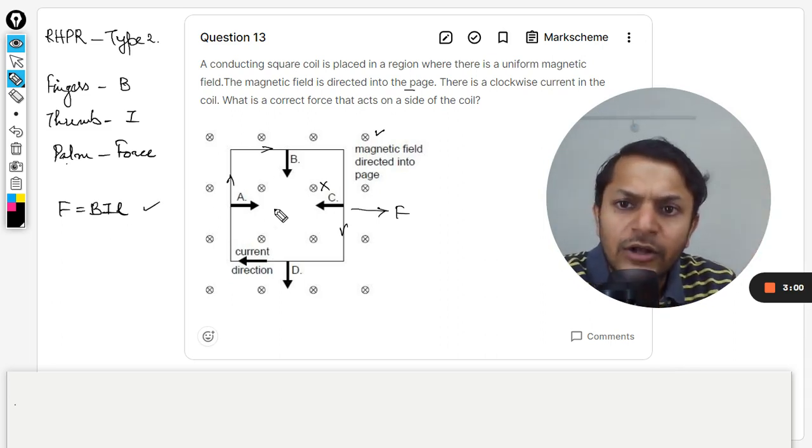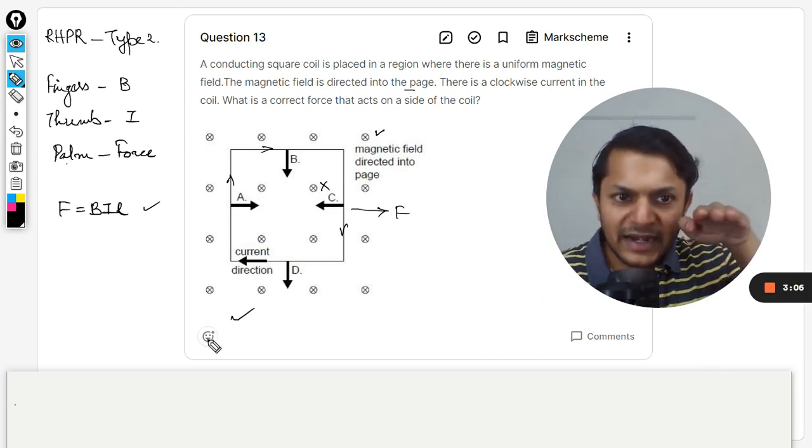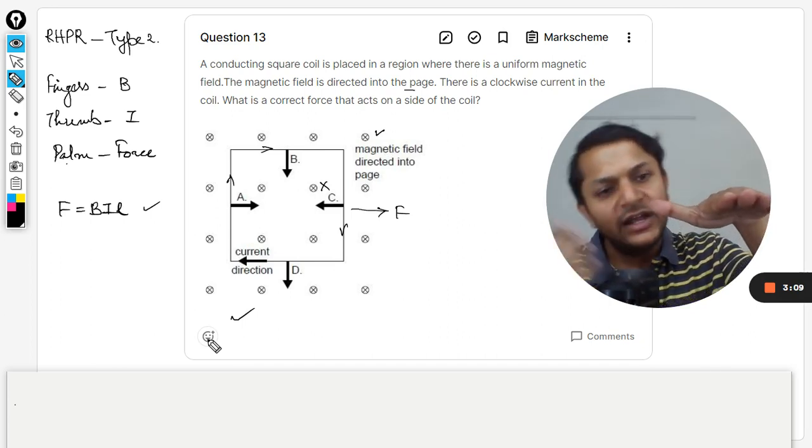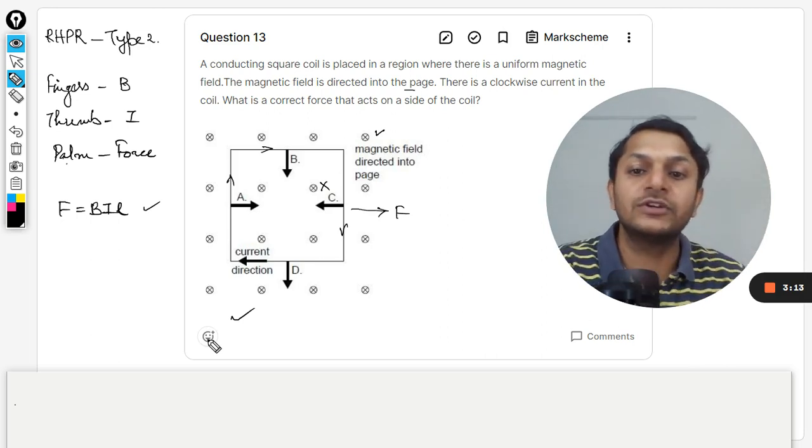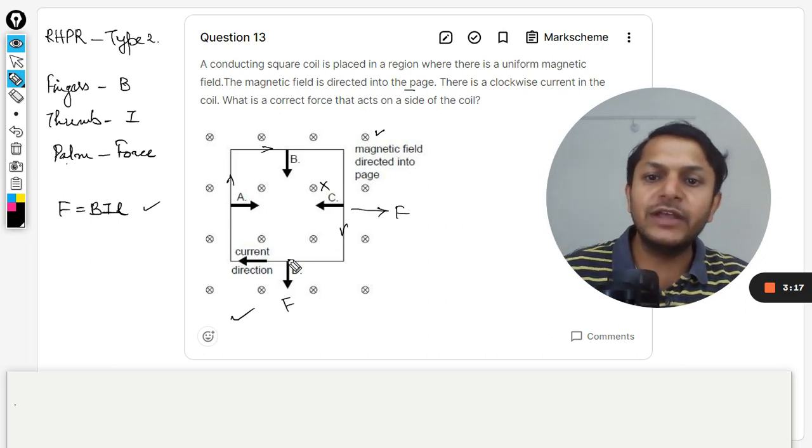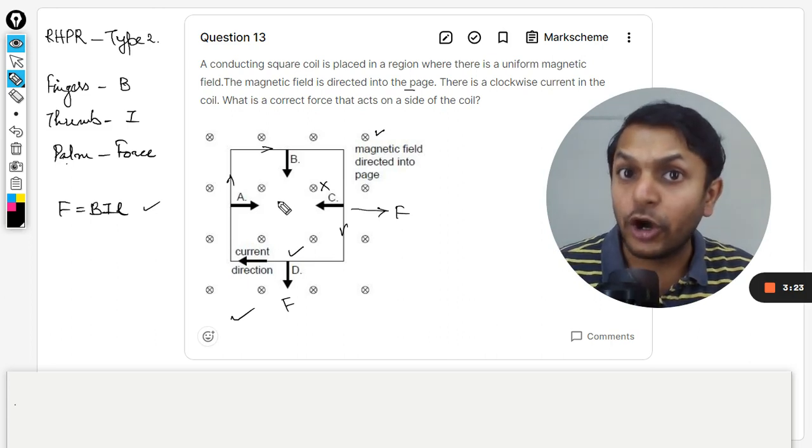Let us go for D now. The magnetic field is into the page and the current is going towards the left hand side. Definitely the palm is pointing downwards and the D direction is showing downwards. It means that yes, this is the force there. D option is definitely correct. Then it means that A and B are going to be wrong.